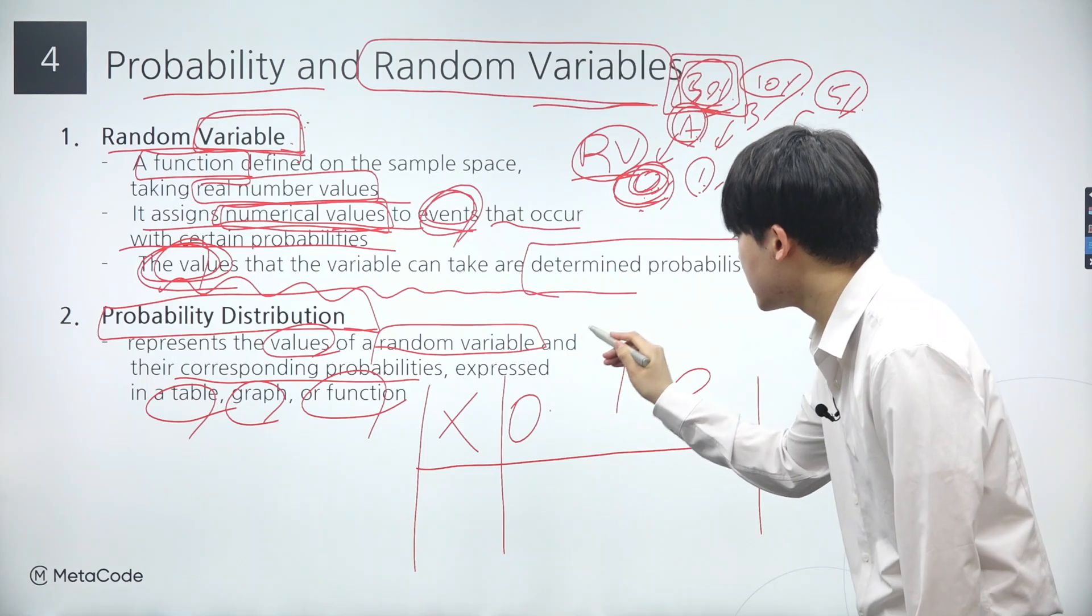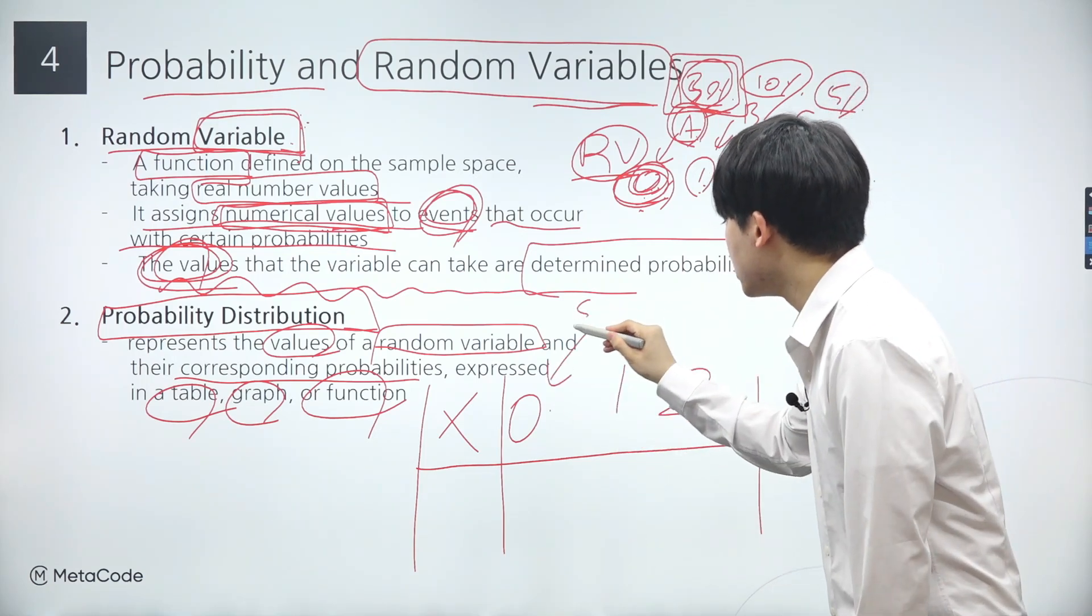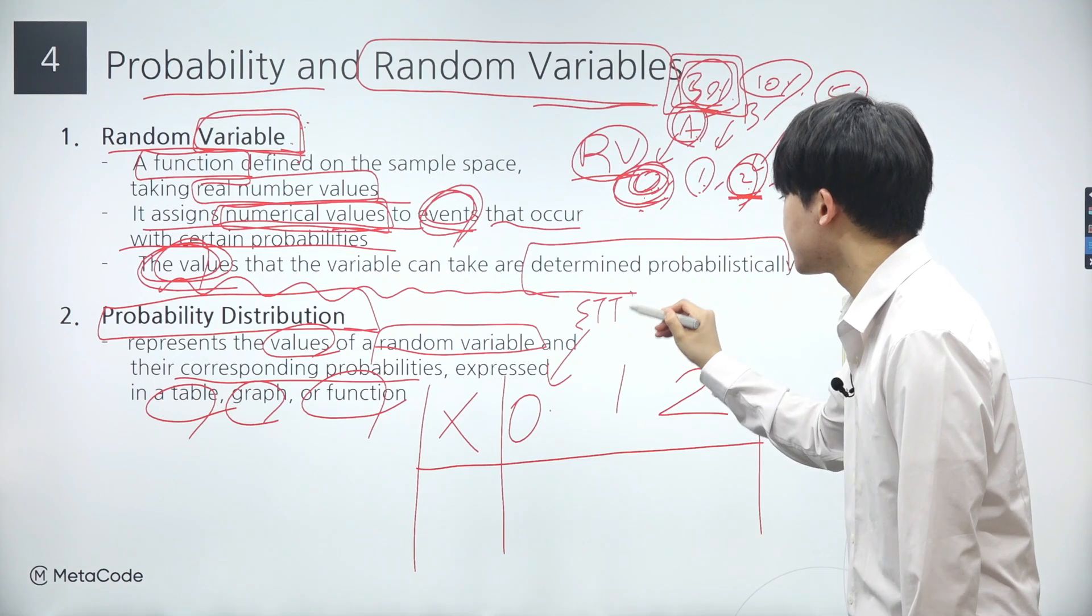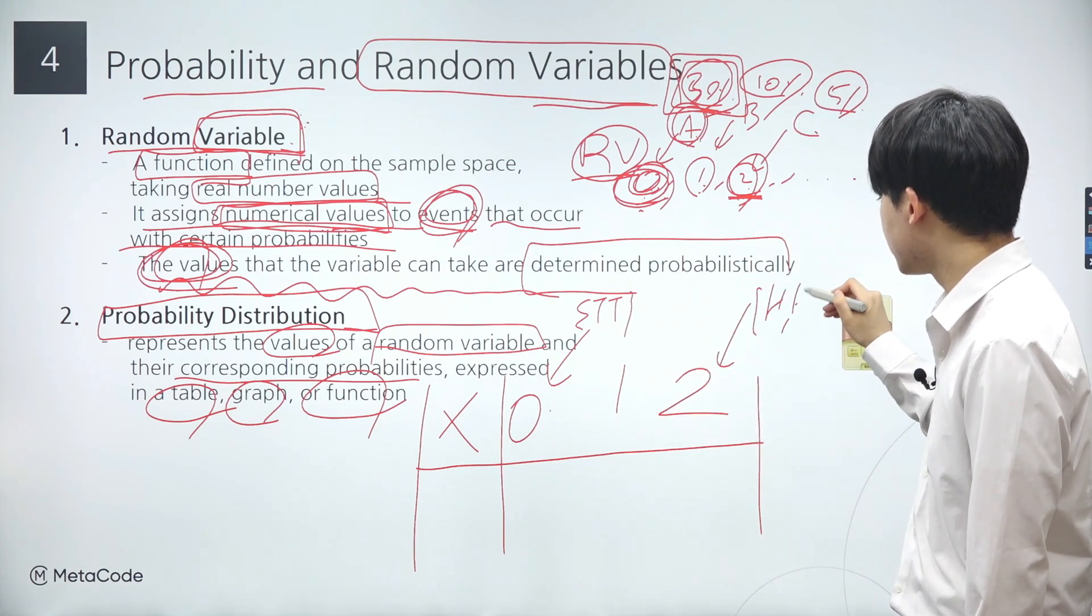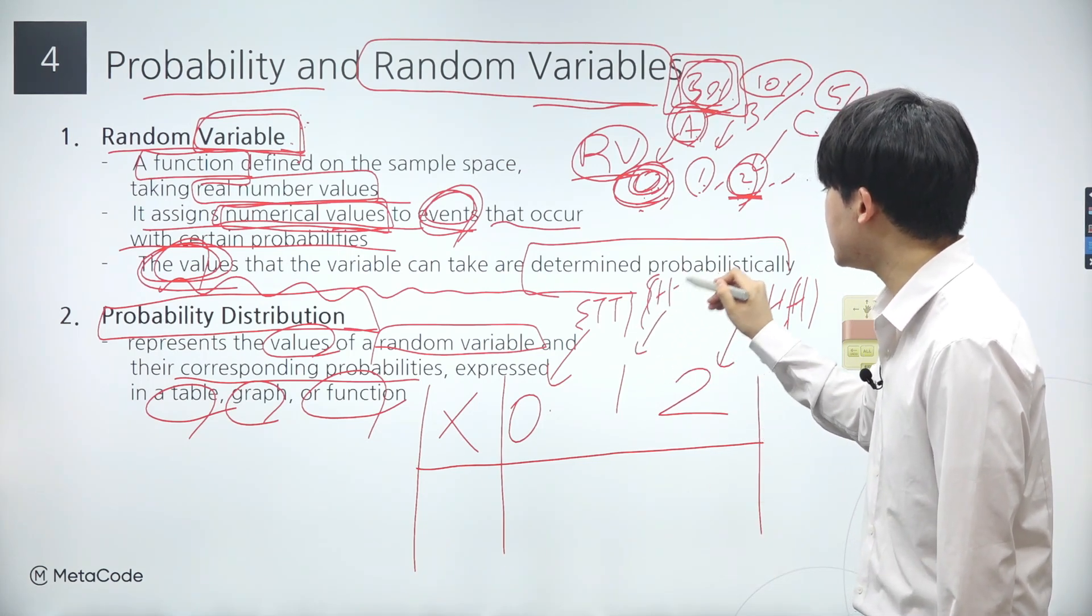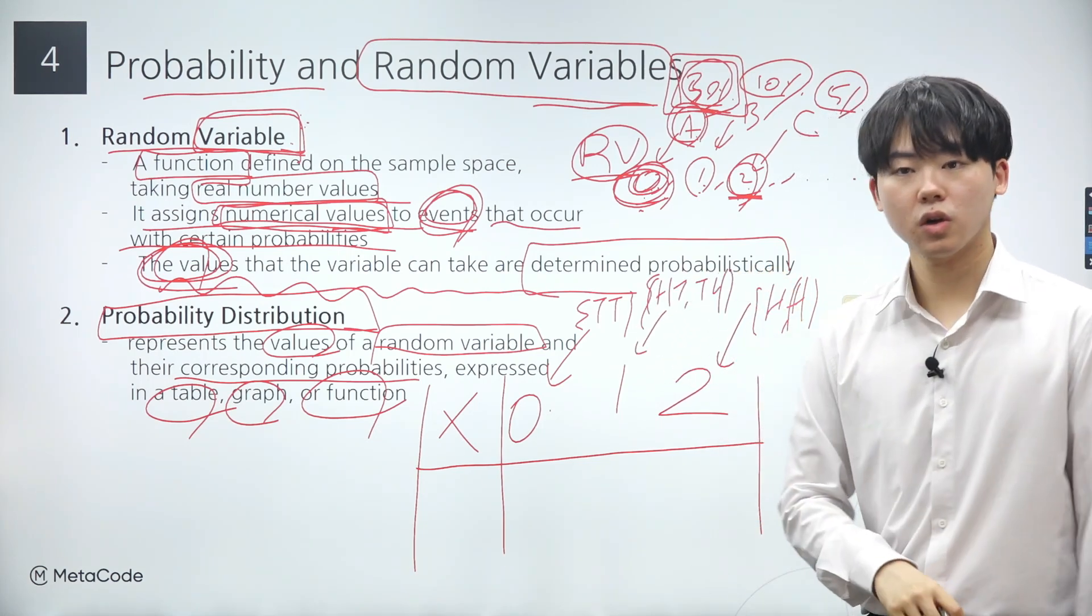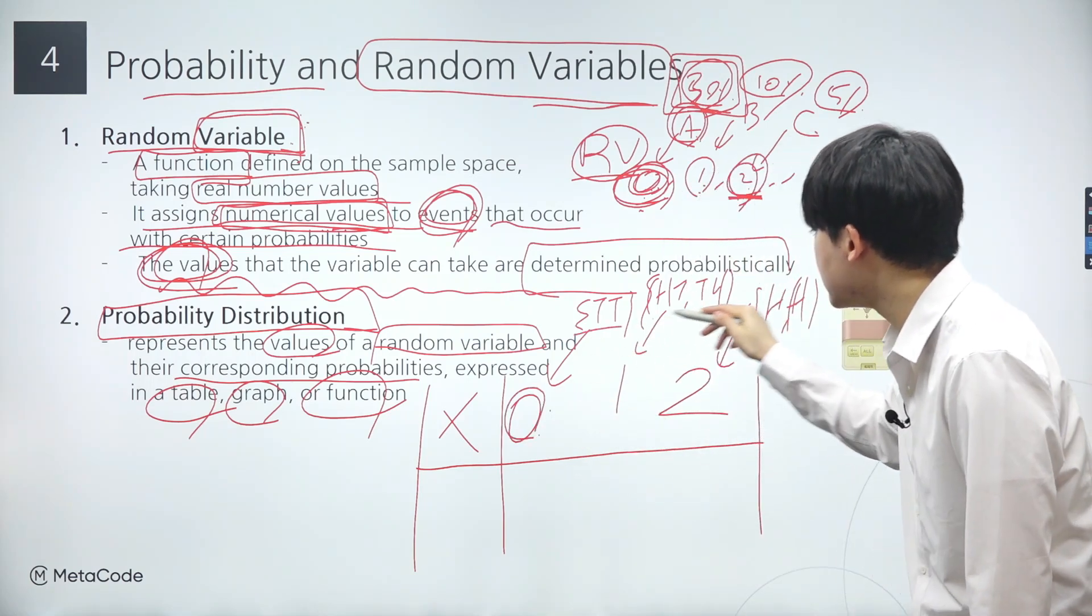Remember, an event is always defined as a set. For instance, the event associated with 0 heads is the set T and T, indicating both flips resulting in tails. Similarly, the event associated with two heads is the set H and H. And lastly, the event associated with one head comprises the outcomes H, T and T, H.